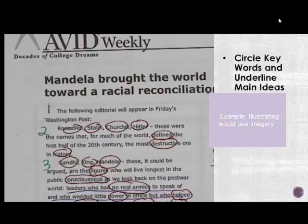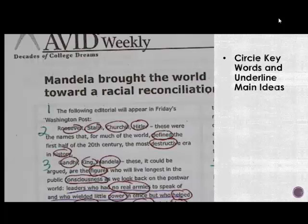You should have already marked your text before you get to the charting. Marking is circling your keywords, underlining your main ideas, and of course you start with numbering your paragraphs. Those paragraph numbers will come in handy soon.